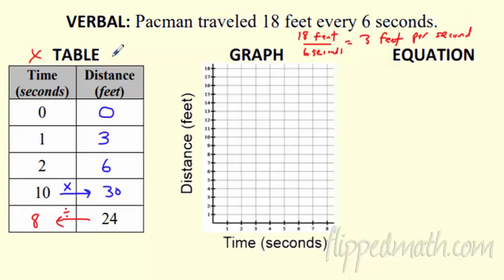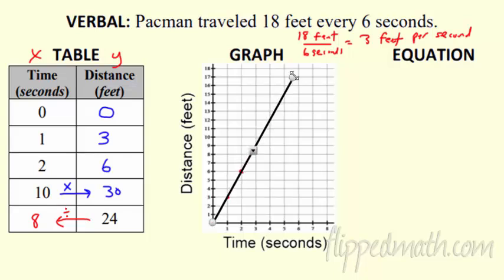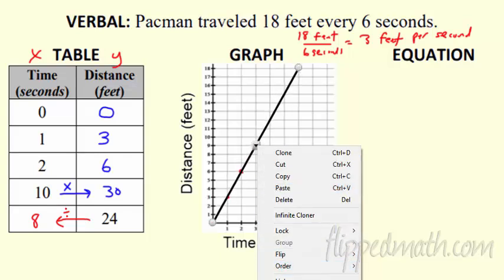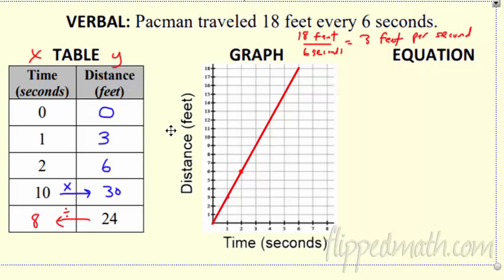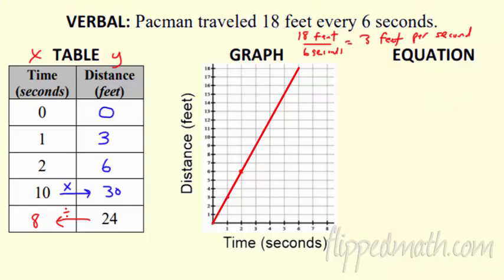We turn that into a graph. If you want to plot all these points: 0,0 is right here. At 1 second he is at 3 feet. At 2 seconds he is at 6 feet. At 10, it's not on my graph, but it would be if I kept going. At 8, it looks like 8 is at 24 — not on my graph either. All these points, remember, if it's a nice proportional relationship, they make a nice straight line. This line really goes on forever. So we've got this nice proportional graph that goes through the origin as a straight line. We've got this table. The last thing we're doing is just wrapping it up with the equation.